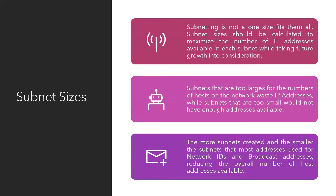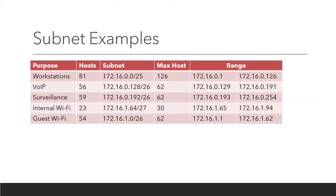Subnets that are too large for the number of hosts waste IP addresses, while subnets that are too small won't have enough addresses. The more subnets created and the smaller those subnets, the fewer IP addresses available for hosts — since each additional subnet created takes away two IP addresses for its network ID and broadcast address.